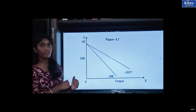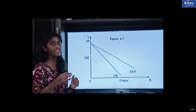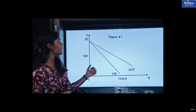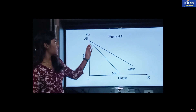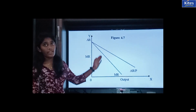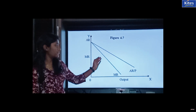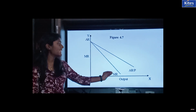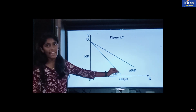If the table is depicted in the form of a diagram, in the form of a graph it would be like this: this is your AR curve and this is your MR curve. Here the MR curve would be reducing at a faster rate, so it would be slightly steeper than the AR curve.